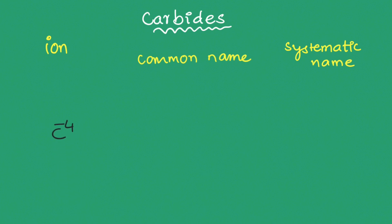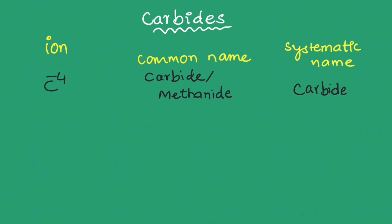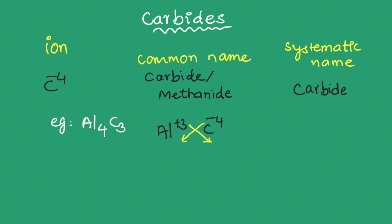The first carbide ion is C⁴⁻. Its common name is carbide or methanide, and the systematic name is carbide. An example is aluminium carbide (Al₄C₃). The formula is formed using the crisscross method: aluminium has a +3 charge and carbide has a −4 charge, giving Al₄C₃.